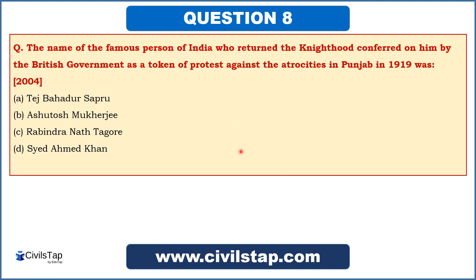This question came in the prelims of 2004: 'The famous person of India who returned the knighthood conferred on him by the British government as a token of protest against the atrocities in Punjab in 1919 was...' When we read about the Rowlett Act, we also studied that Rabindranath Tagore returned his knighthood against the Rowlett Act and the Jallianwala Bagh massacre. So option C — Rabindranath Tagore — is the answer.